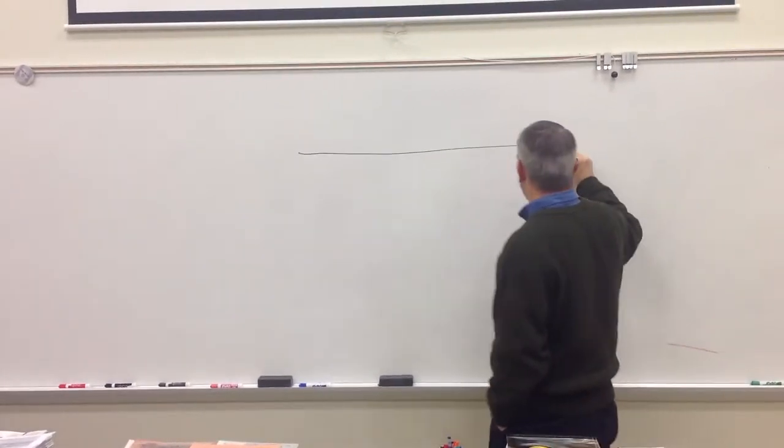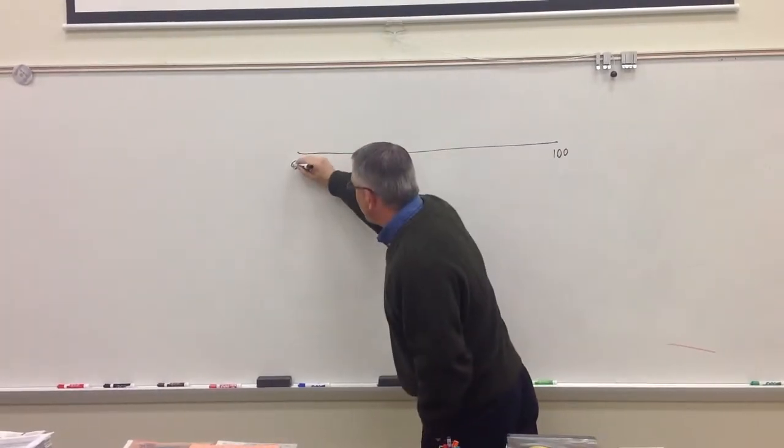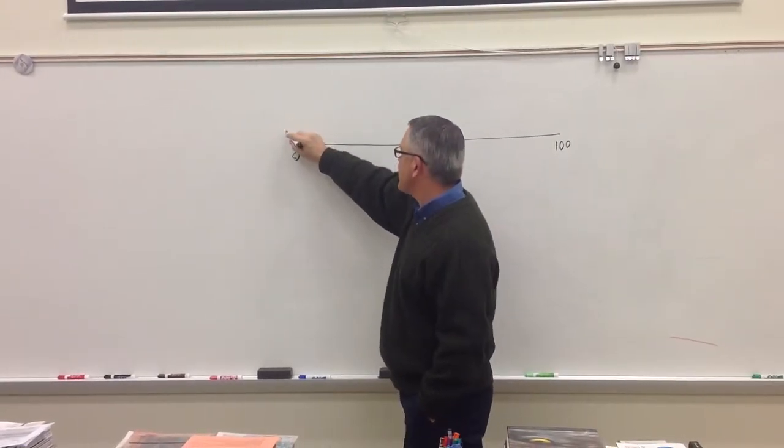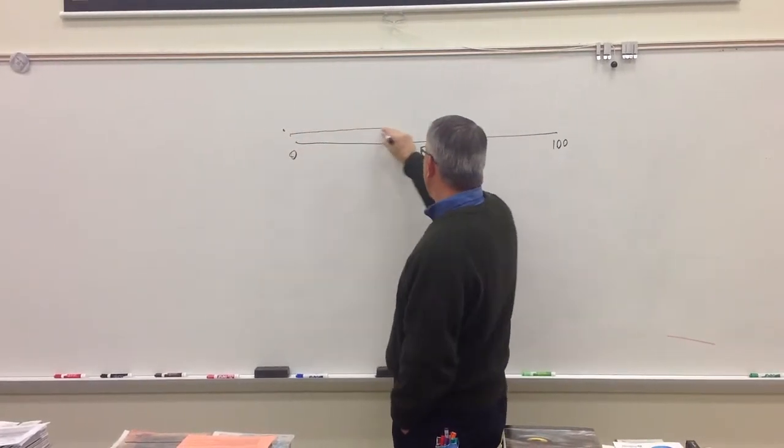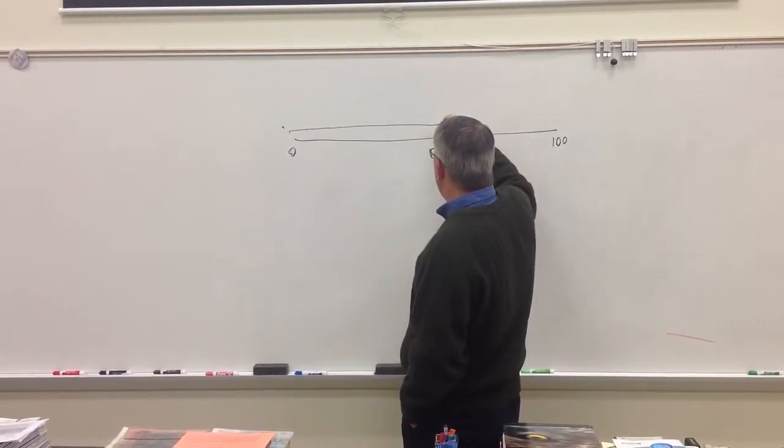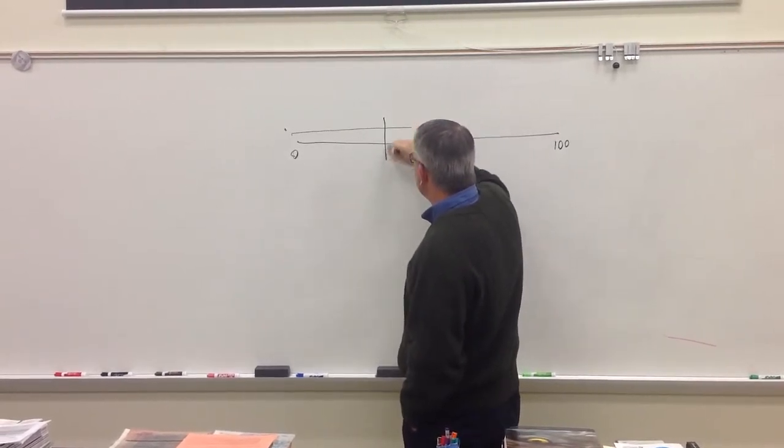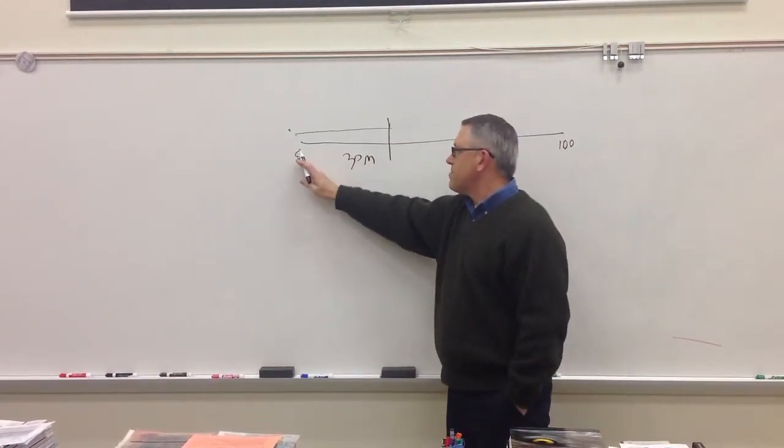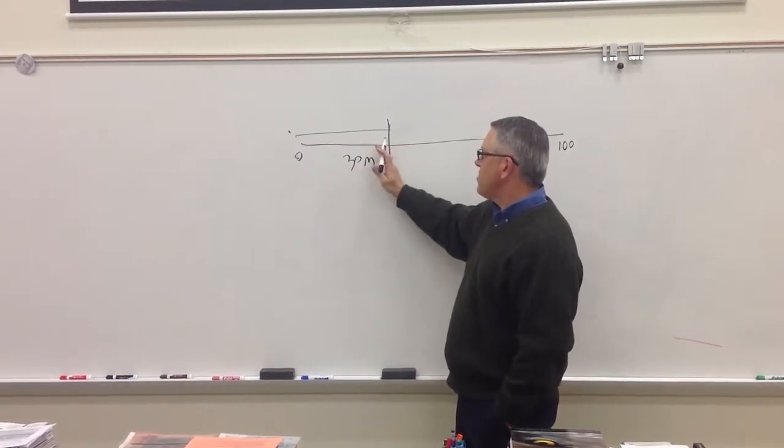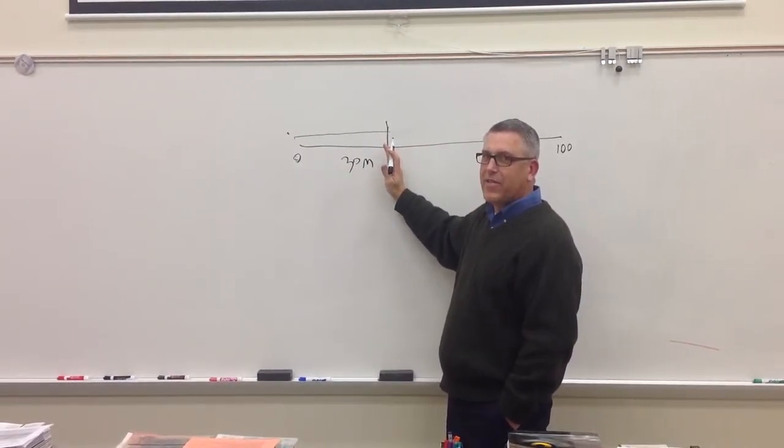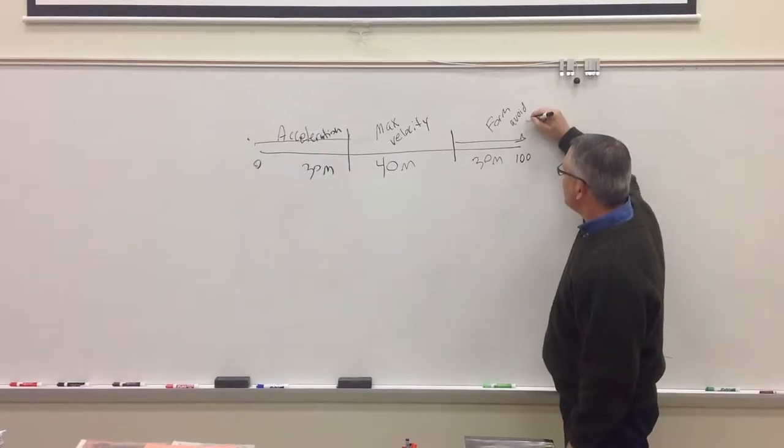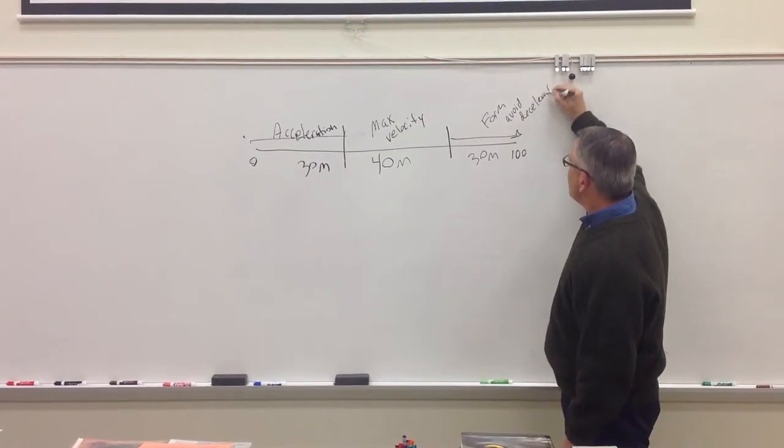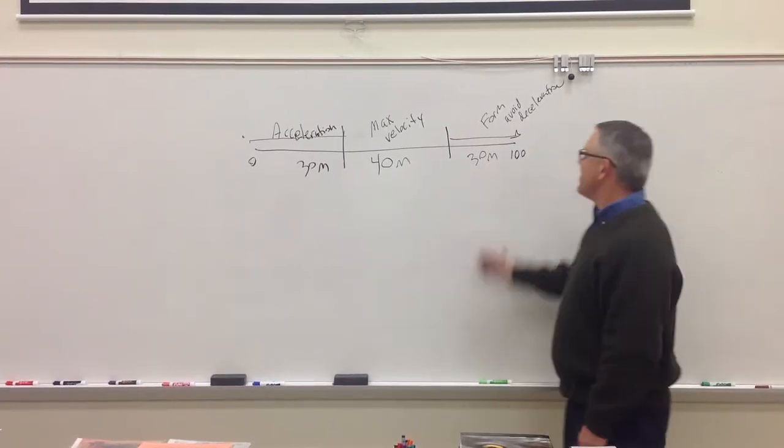If we were going to have an athlete run 100 meters from point zero, from a dead stop in the blocks, he's going to be accelerating probably up and through about 30 meters of that race. So, for the first 30 meters, we would work on him going from time zero to a set amount of meters per second that we would like to see that athlete run in the race.